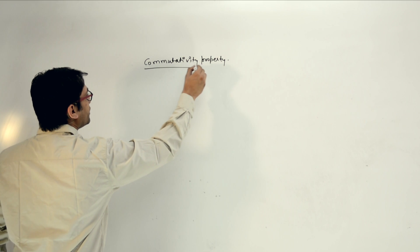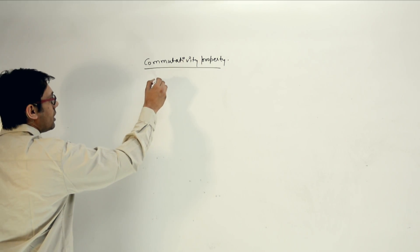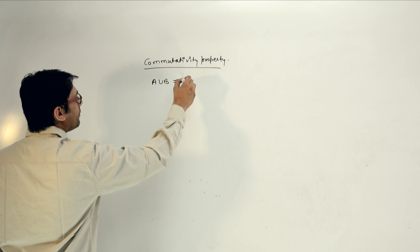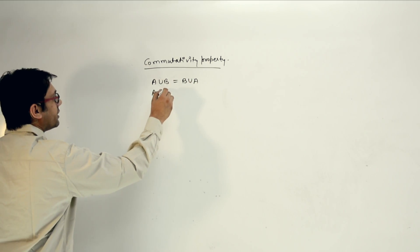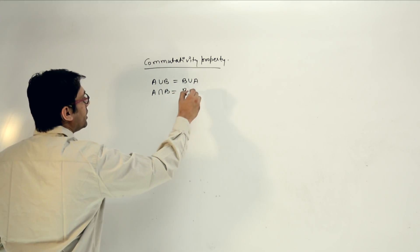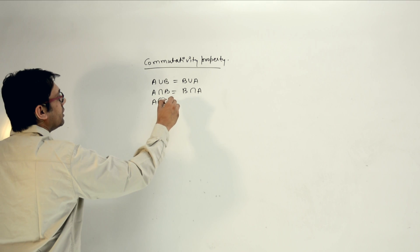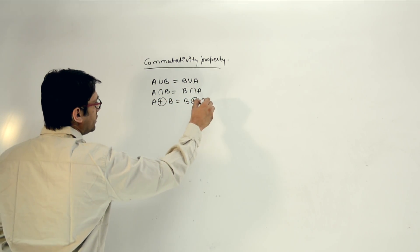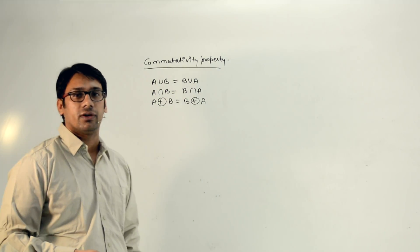So what is the commutativity property? If we have A union B, then we can also write it as B union A. At the same time, if we have A intersection B, then we can also write it as B intersection A. And if we have A symmetric difference with B, then we can also write it as B symmetric difference with A. This looks very obvious to everyone.